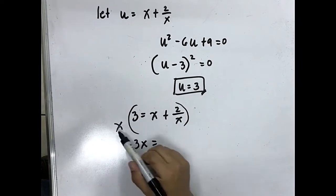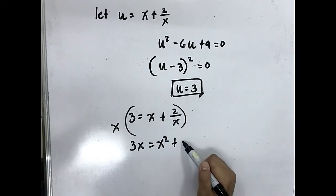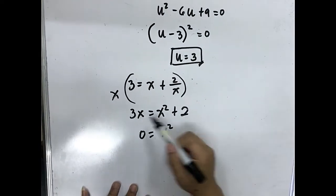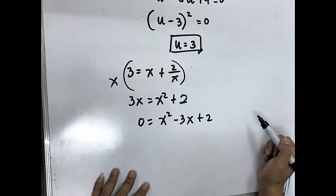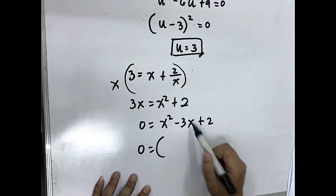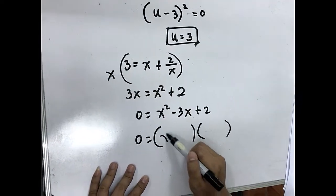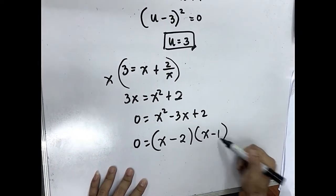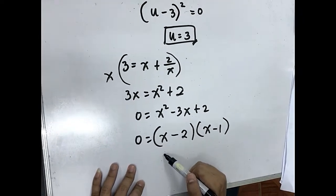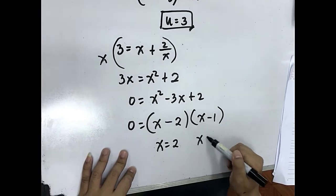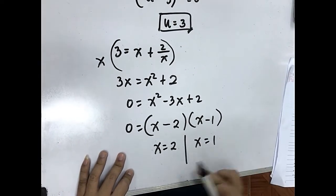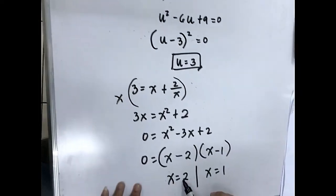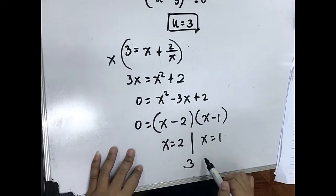Factor: u minus 3 squared equals 0, so u equals 3. Substitute back: 3 equals x plus 2 over x. Multiply by x: 3x equals x squared plus 2. Rearrange to x squared minus 3x plus 2 equals 0. Factor: x minus 2 times x minus 1 equals 0, giving x equals 2 and x equals 1. Sum of roots: 2 plus 1 equals 3.